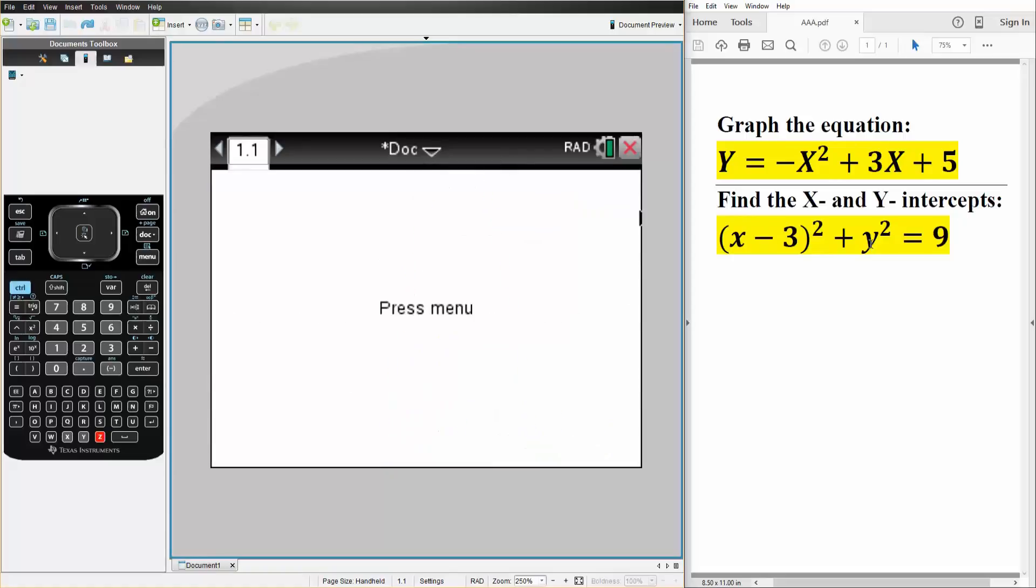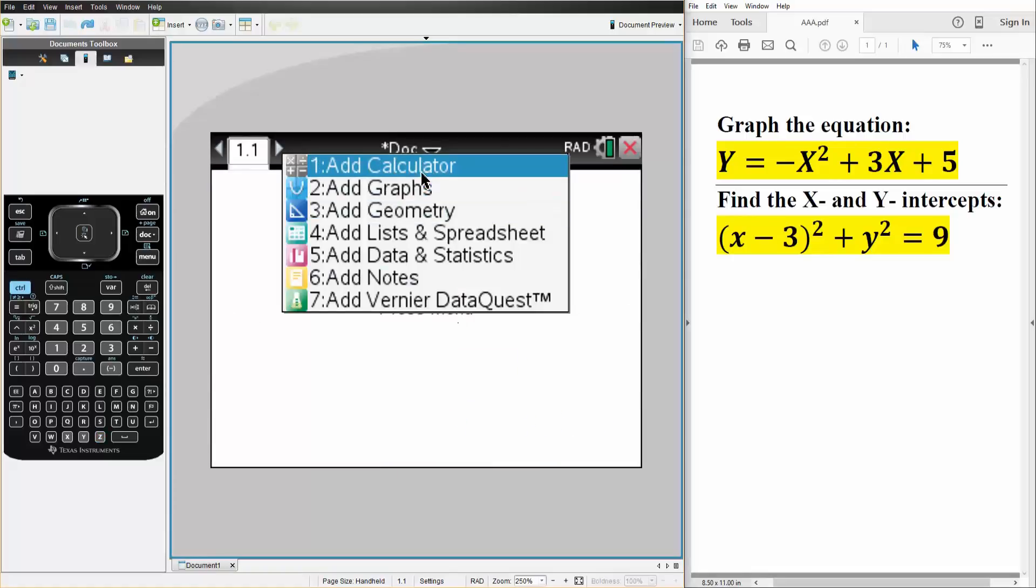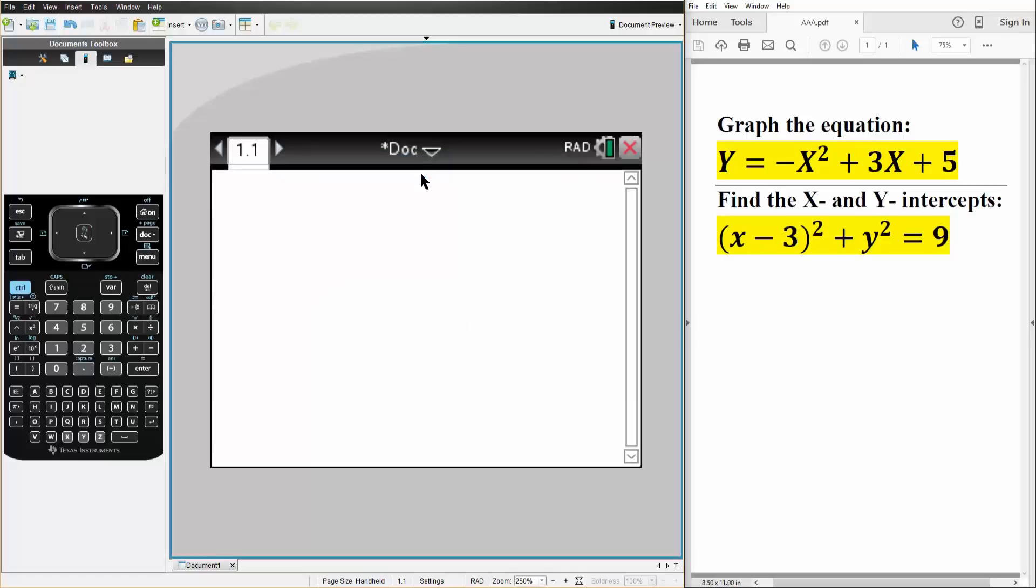So I'm going to hit add calculator, and in order to get the x intercept, let me just write it down. So first we want to get the x intercept, then we want to get the y intercept. I'll just write this to give us an idea: x intercept.